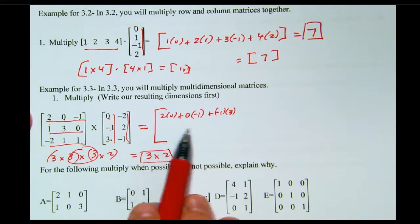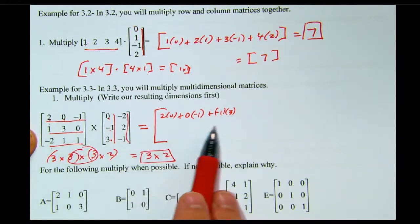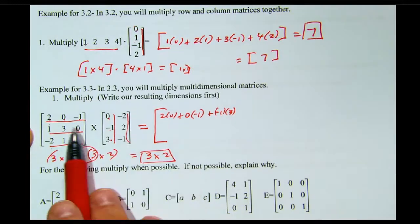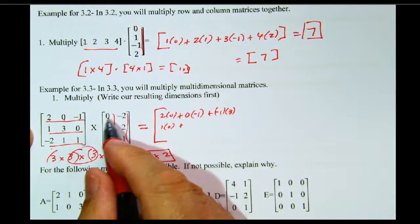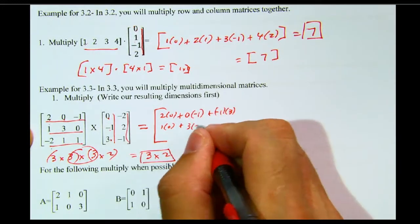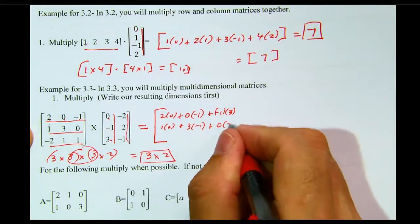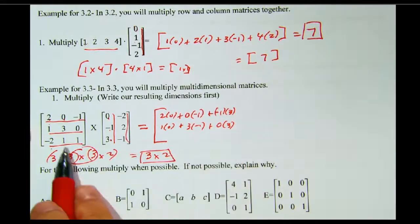Now, if I want to go here, well, I use the second row because it is the second row. And I'm going to use the first column because it is the first column. So I'm going to go 1 times 0 plus 3 times negative 1 plus 0 times 3. Notice that all these numbers are kind of the same.